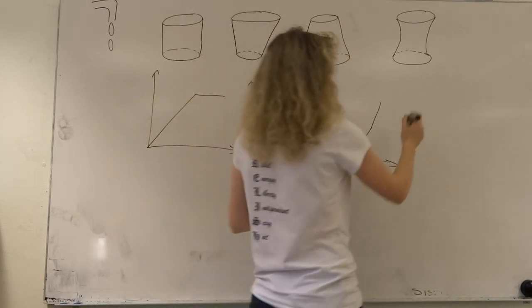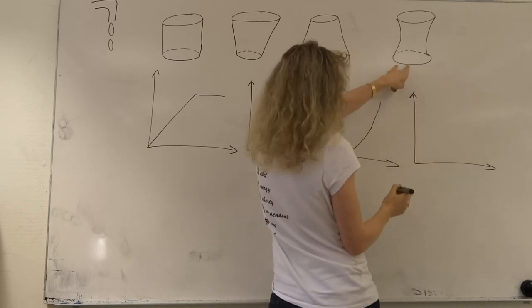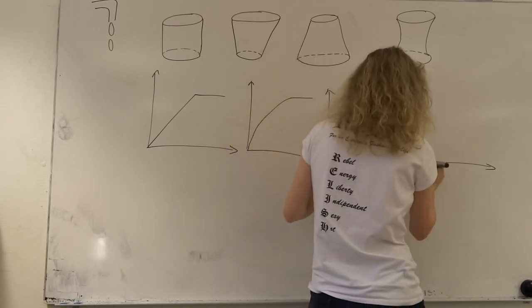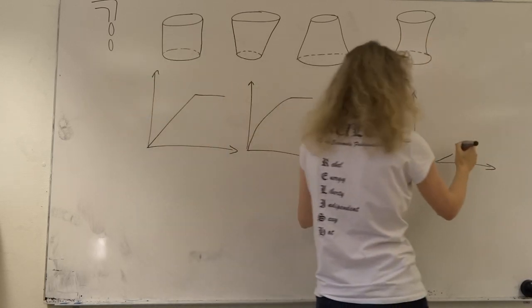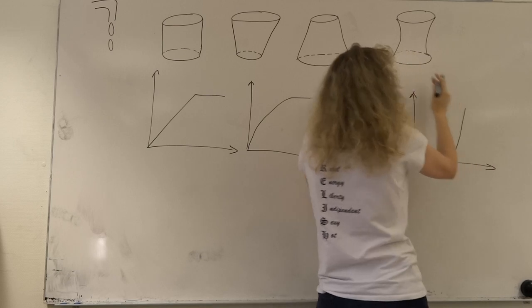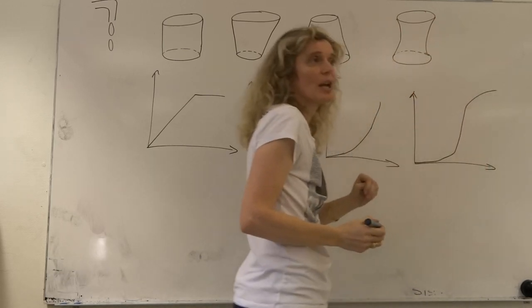And then we have this last one here, which we can see it's going to start slowly at the bottom like this one. Then there's a point in the middle where it's almost like a straight cylinder. And then it's going to go slow again at the top, so it's going to look like that one.